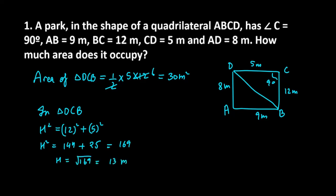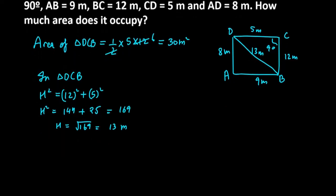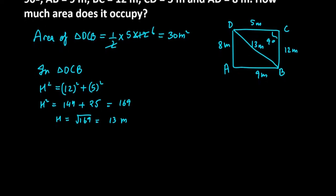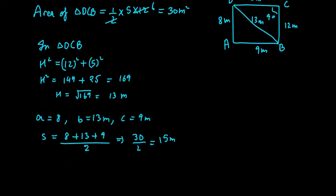Now the triangle has all three sides, so we can use Heron's formula to find the area of ADB. a = 8, b = 13 meters, c = 9 meters. Now we find s: (8 + 13 + 9) divided by 2. 8 plus 13 is 21, 21 plus 9 is 30, 30 divided by 2 is 15 meters.